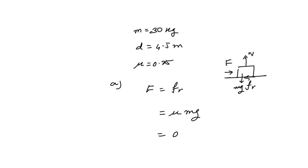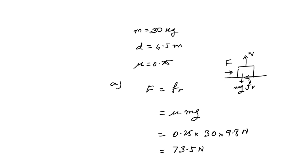μ is 0.25, the mass is 30, and g is 9.8 N. Let's see how much we get: 73.5 N is the force that is applied. Now part (b), how much work is done on the crate by this force?